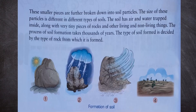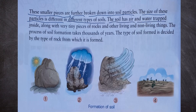These smaller pieces are further broken down into soil particles. The size of these particles is different in different types of soils. The soil has air and water trapped inside, along with very tiny pieces of rocks and other living and non-living things. The process of soil formation takes thousands of years. The type of soil formed is decided by the type of rock from which it is formed.